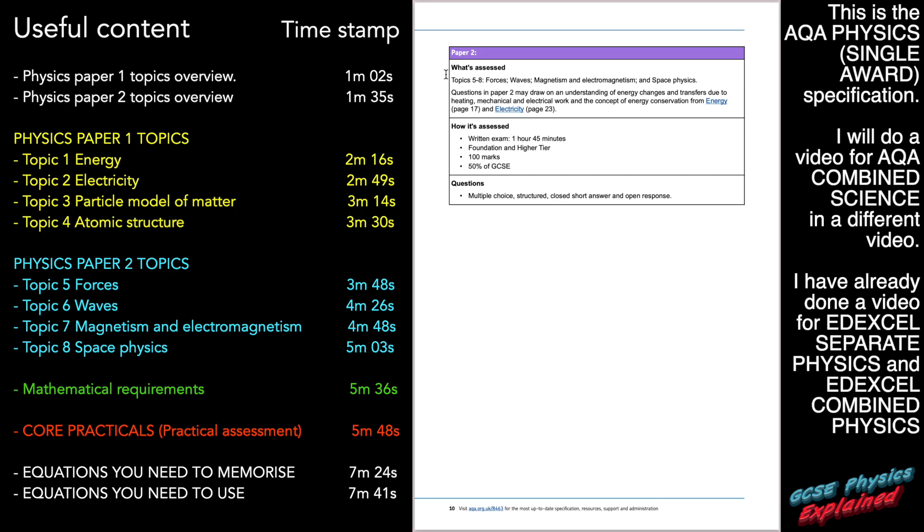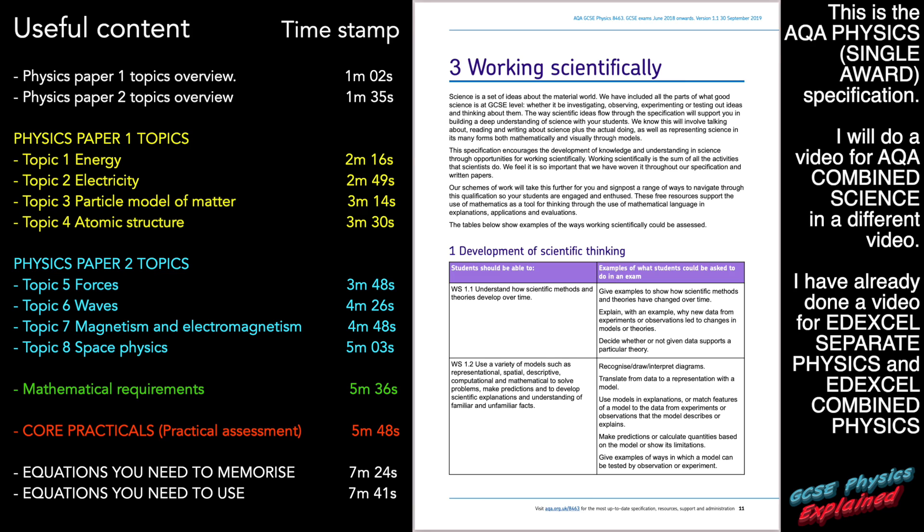Paper two, that's going to assess topics five to eight, which is forces, waves, magnetism and electromagnetism and space physics. Again, the paper's on for one hour and 45 minutes. It's worth 100 marks and it's 50% of your overall GCSE. Pause the video if you want to have a look at the page, but this is just for teachers really.